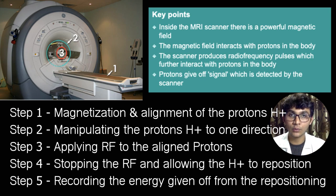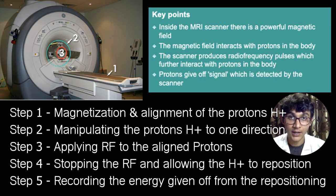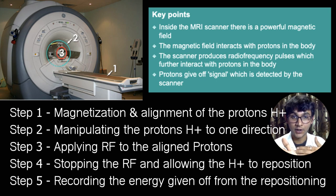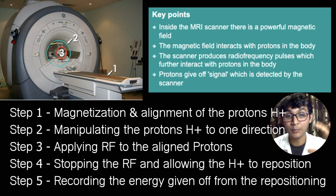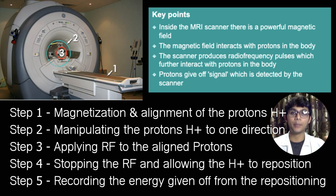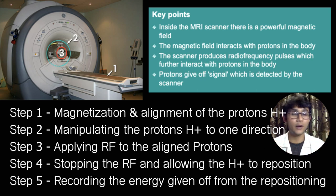After alignment, the machine shocks you with a radio frequency wave, then stops that radio frequency. Your protons then begin realigning themselves, and during that realignment, an amount of energy is released which is captured by the MRI machine. This captured energy map is later transcribed into a very high definition image.